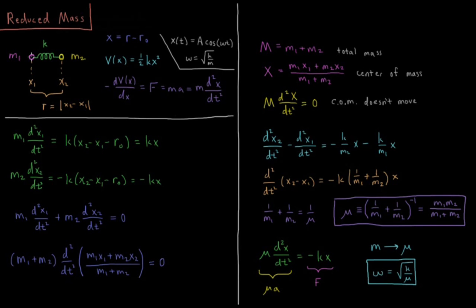If particle 1 weighs more, then it's going to be more towards atom 1. If atom 2 weighs more, it's going to be more towards atom 2. But this is the formula for the center of mass of two particles in space. This says that big M times the second derivative of big X, the center of mass with respect to time, equals 0. This first equation tells us that the center of mass doesn't move over time.